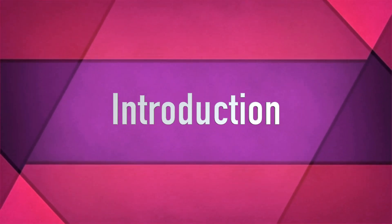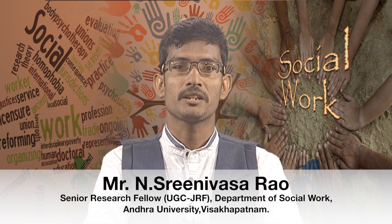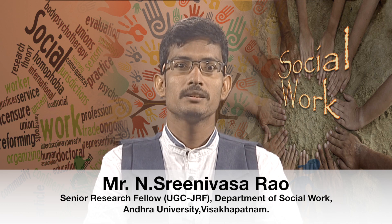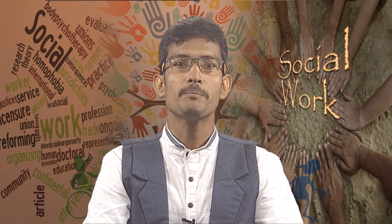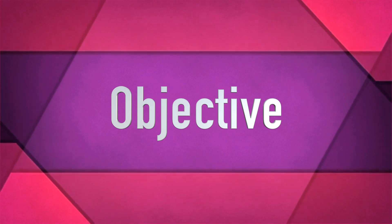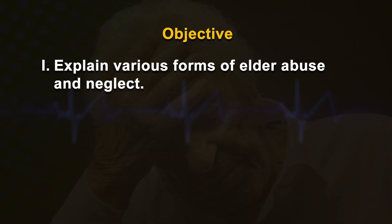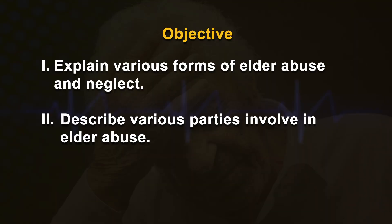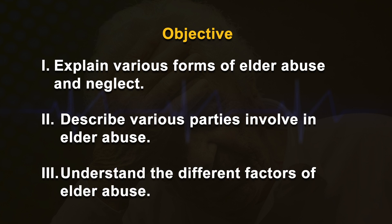Today's lesson is Factors and Forms of Elder Abuse and Neglect. This lesson explains various forms of elder abuse and the factors that contribute to it, and helps gain understanding about the different parties involved. The objectives are to explain various forms of elder abuse and neglect, describe the parties involved, and understand the different factors of elder abuse.